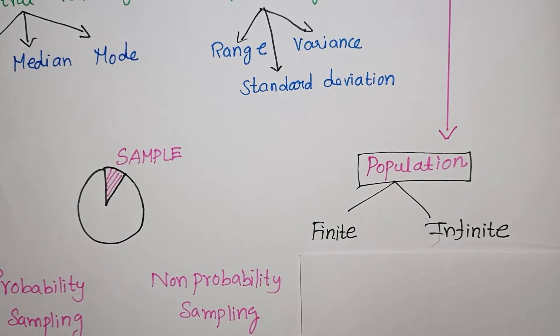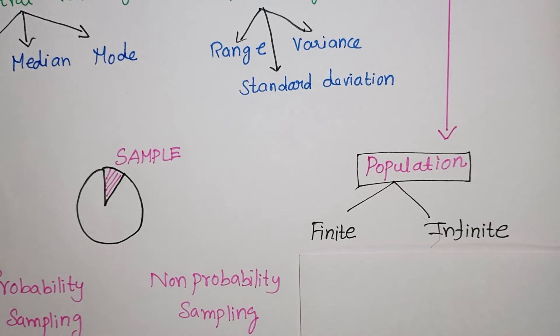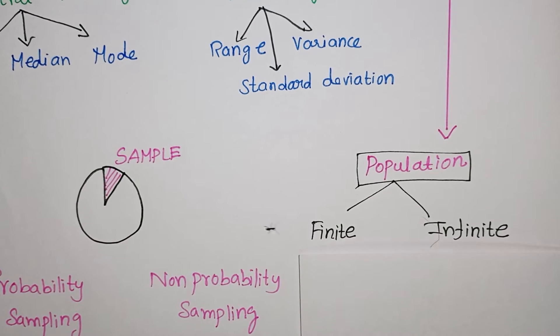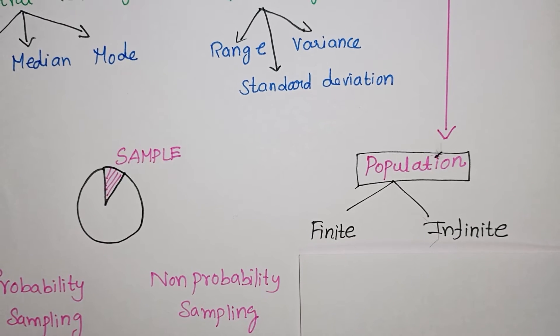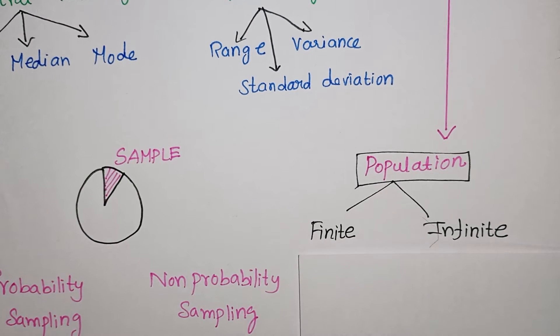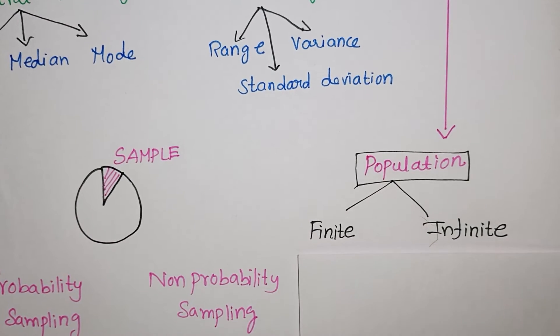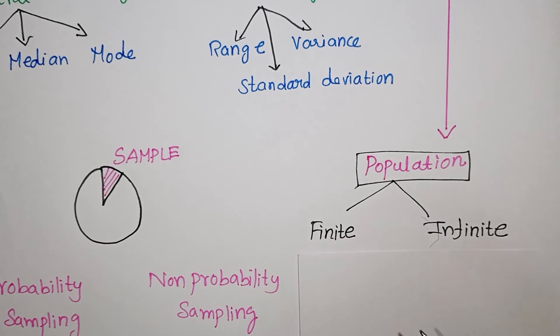Infinite population is uncountable — for example, the number of stars. An uncountable population is an infinite population.